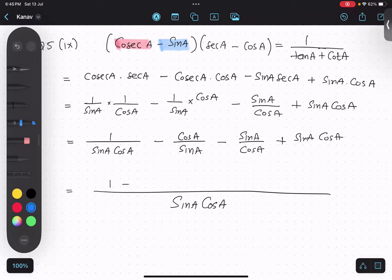Sin A and cos A, so it will become one. And we have sin A over here, so cos will get multiplied, cos square A, sin square A.